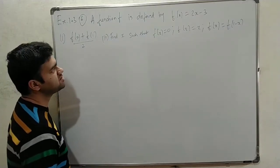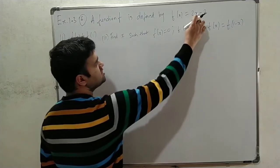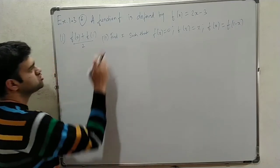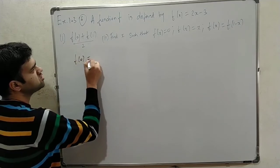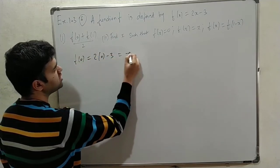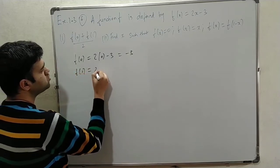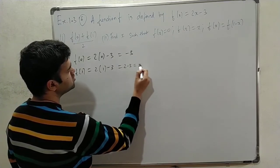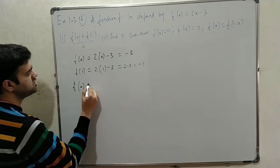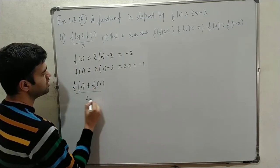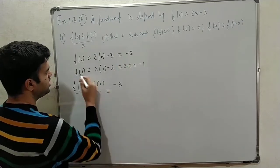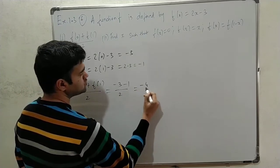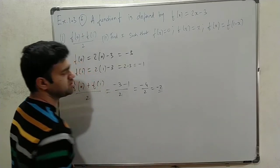If f of x is defined as 2x minus 3, find the value of (f of 0 plus f of 1) divided by 2. f of 0 equals 2 times 0 minus 3 equals minus 3. f of 1 equals 2 times 1 minus 3 equals 2 minus 3 equals minus 1. So (f(0) plus f(1)) divided by 2 equals (minus 3 plus minus 1) divided by 2 equals minus 4 divided by 2 equals minus 2. That is the answer.